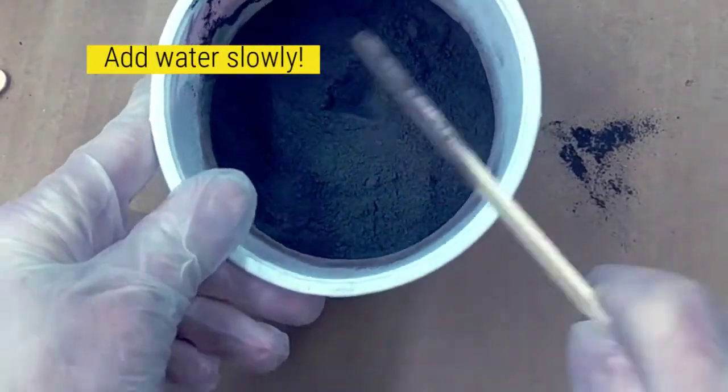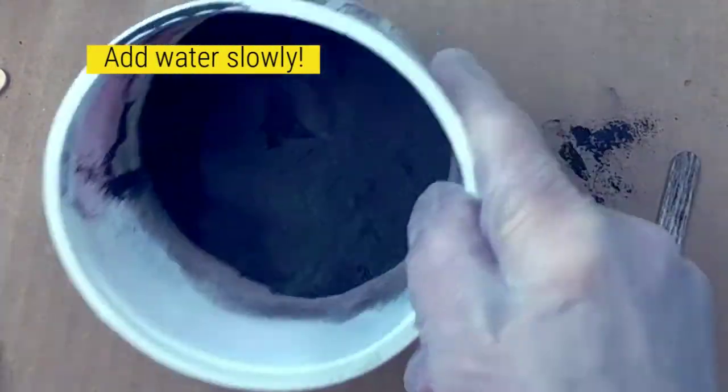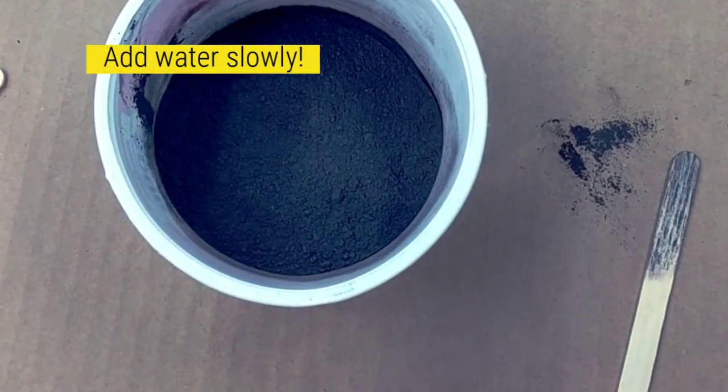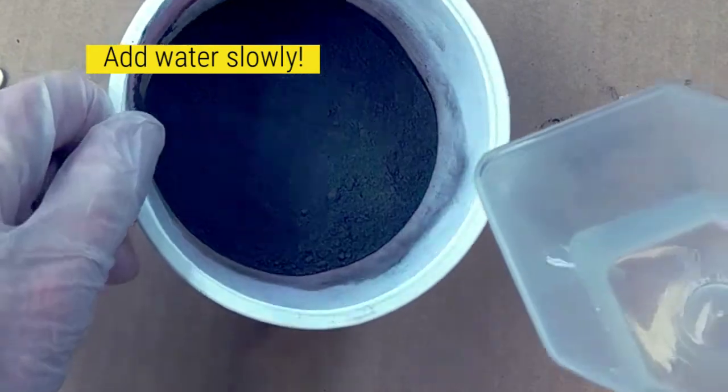So we're going to get ready to mix the grout. You see I've laid some old cardboard down here because it's a pretty messy thing. I've got my six ounces of grout and I'm going to start with one teaspoon or tablespoon reserved.